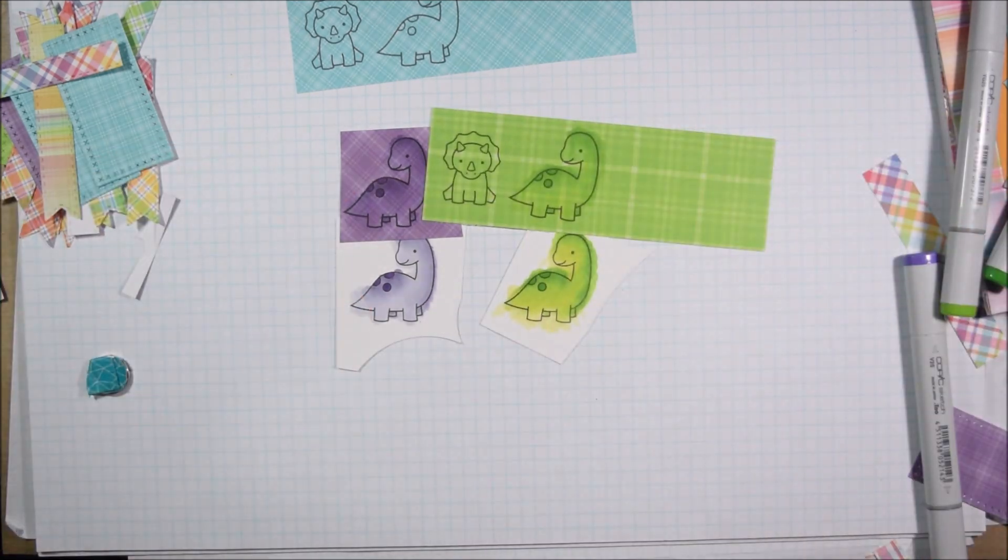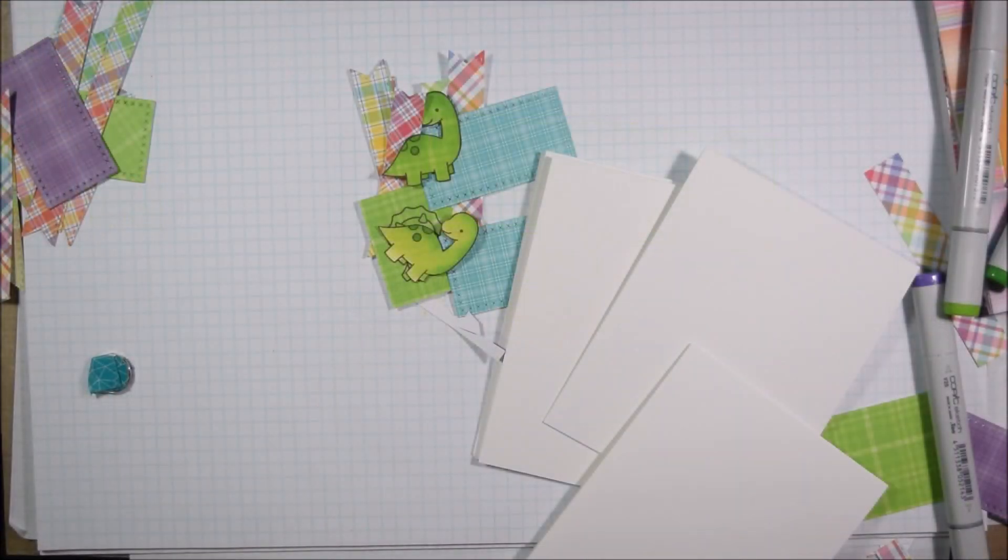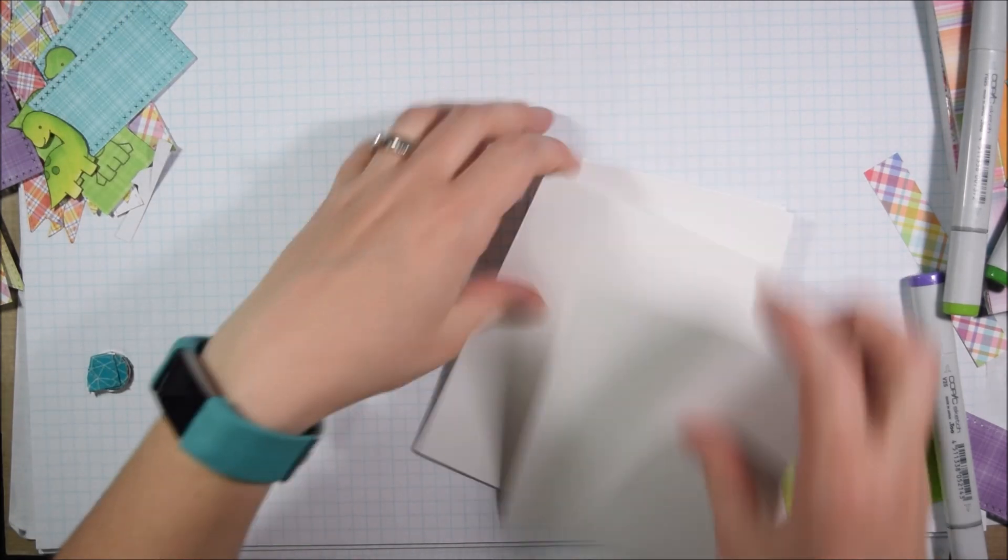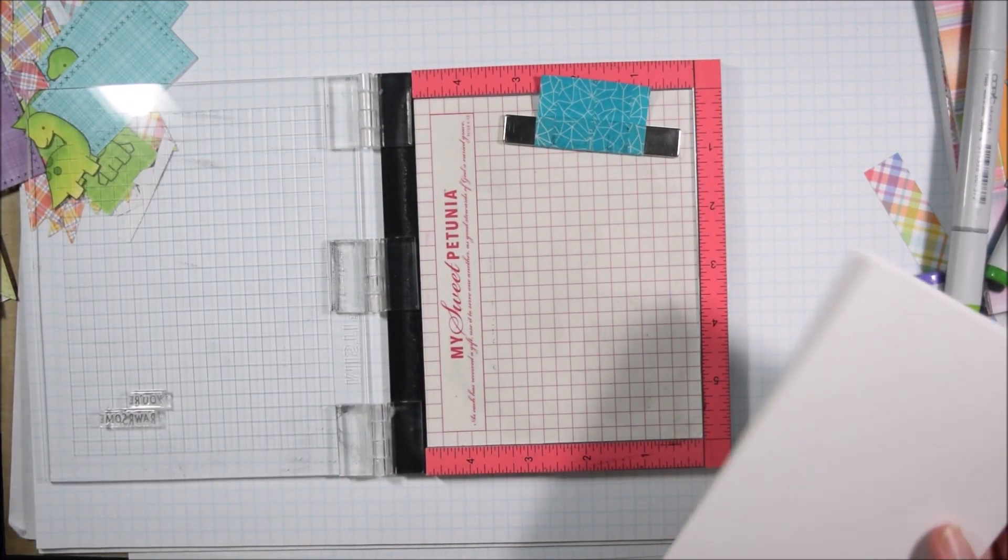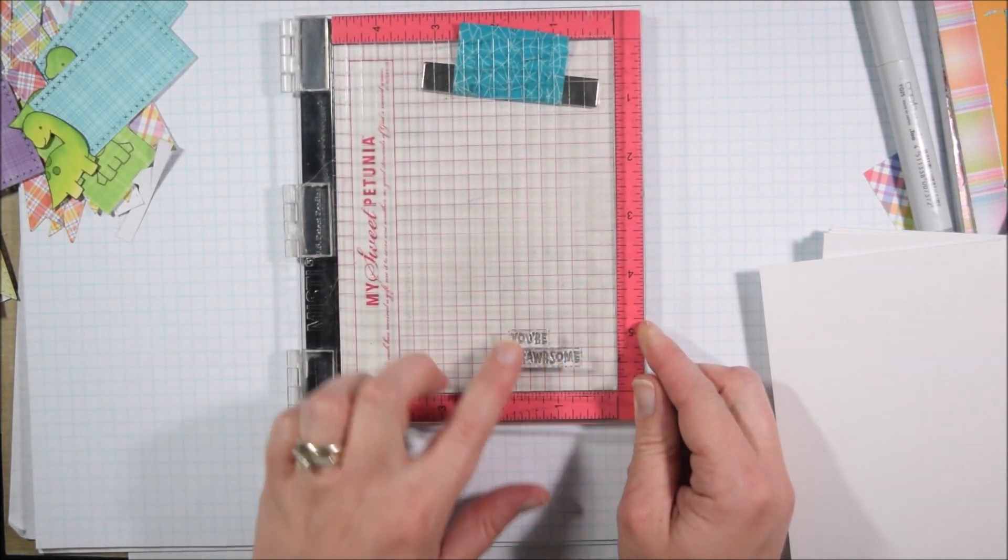Once I had all of my dinosaurs fussy cut, and I did pick the two dinosaurs in the set that were easiest to fussy cut because I didn't have the coordinating dies.